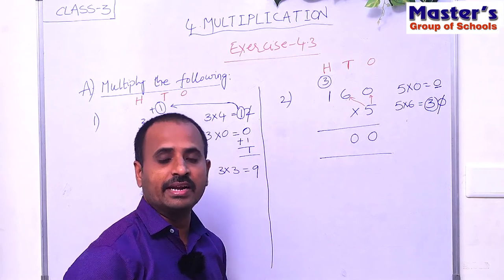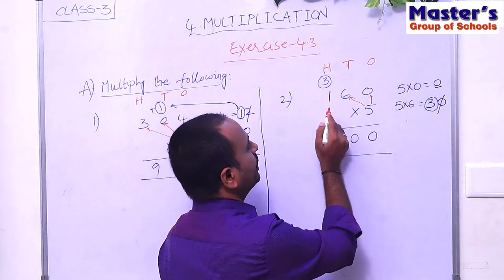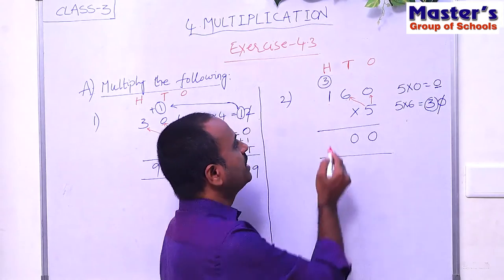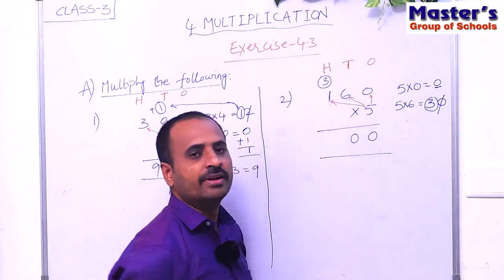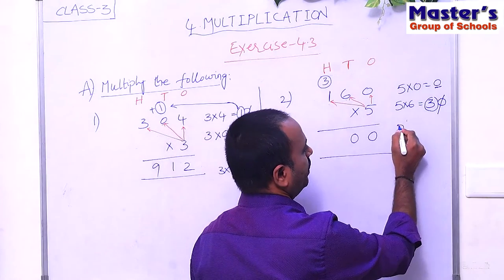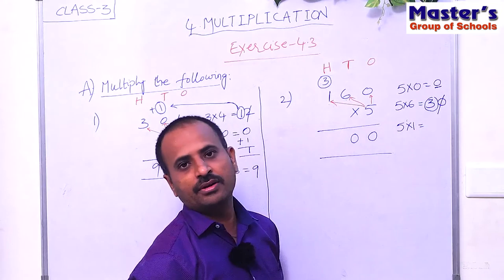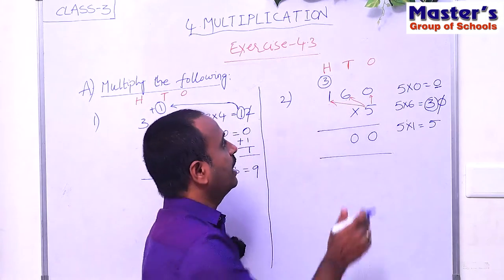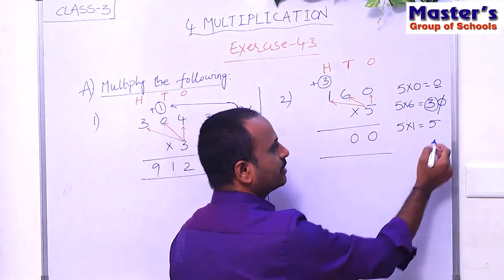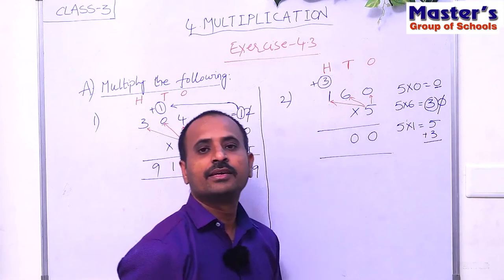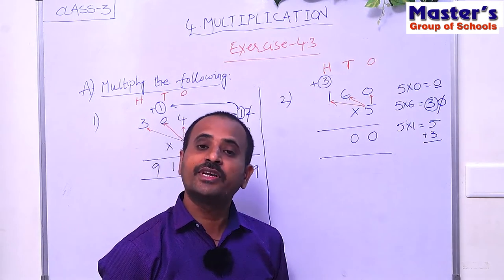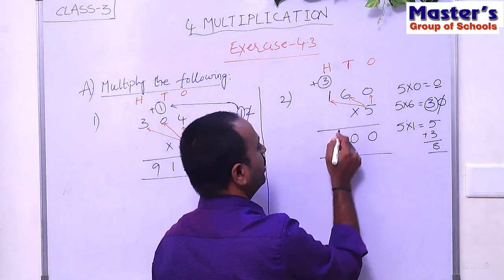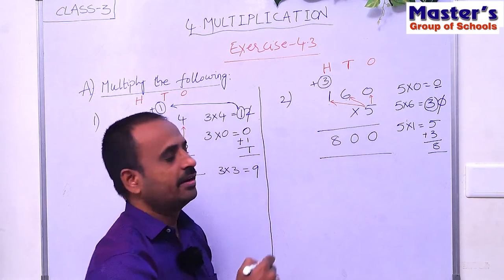Now multiply the digit in hundreds place with 5. The digit in hundreds place is 1, so multiply 1 with 5 — that is 5 × 1. Children, 5 ones are 5. There is a carried number 3, so add 3 to 5: 5 + 3 = 8. Write 8 under hundreds place. The answer is 800.